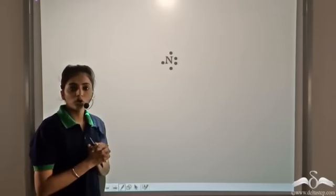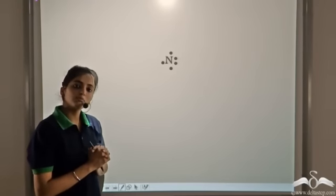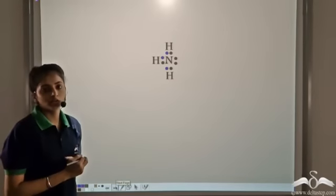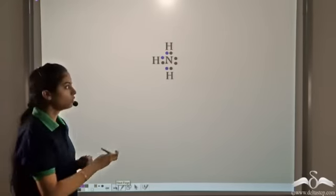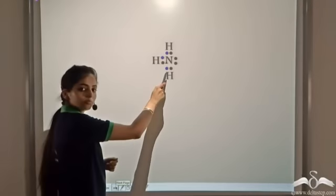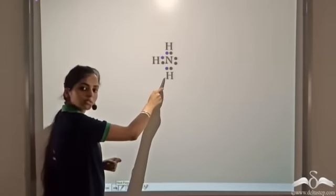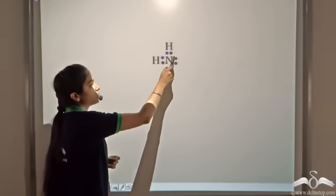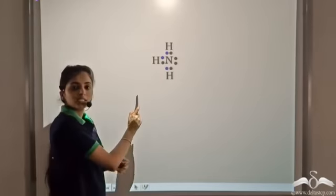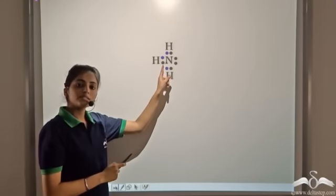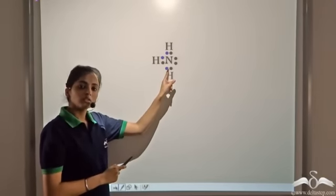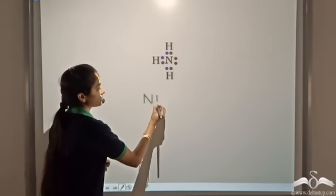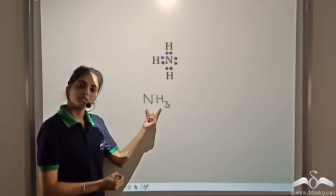In order to satisfy the octet rule, it needs 3 more electrons. So it shares 3 electrons with 3 hydrogen atoms. Now each hydrogen atom has 2 electrons, i.e. it has a duplet structure, and the nitrogen atom has 8 electrons, i.e. it has the octet structure. So this is the formula of ammonia, i.e. NH3.